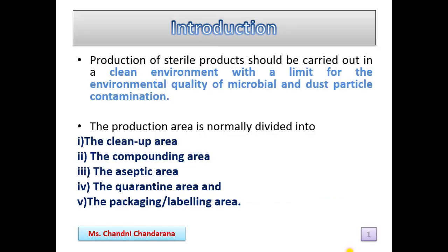We will see how we can carry out the production of sterile products, or parenteral preparations. The production of sterile products should be carried out in a clean environment with a limit for the environmental quality of microbial and dust particle contamination. Sterile products require aseptic processing, and this is a very important process.